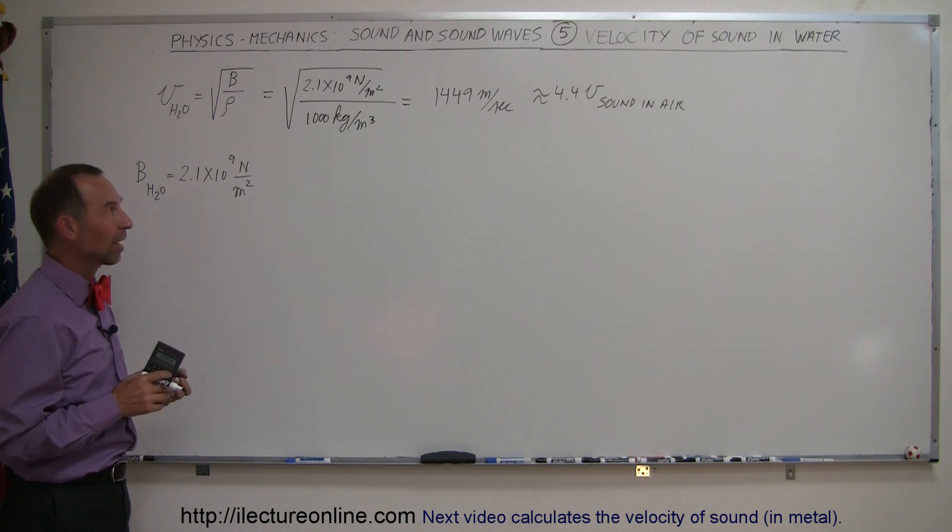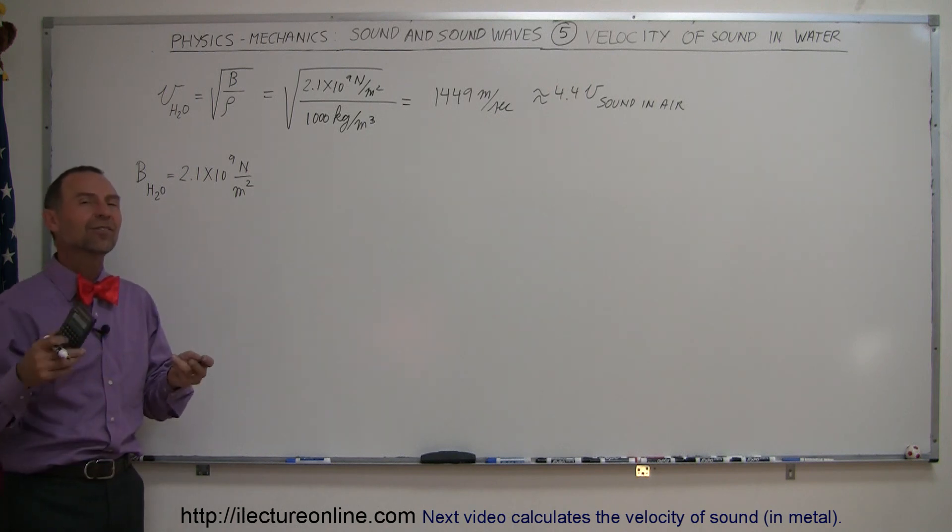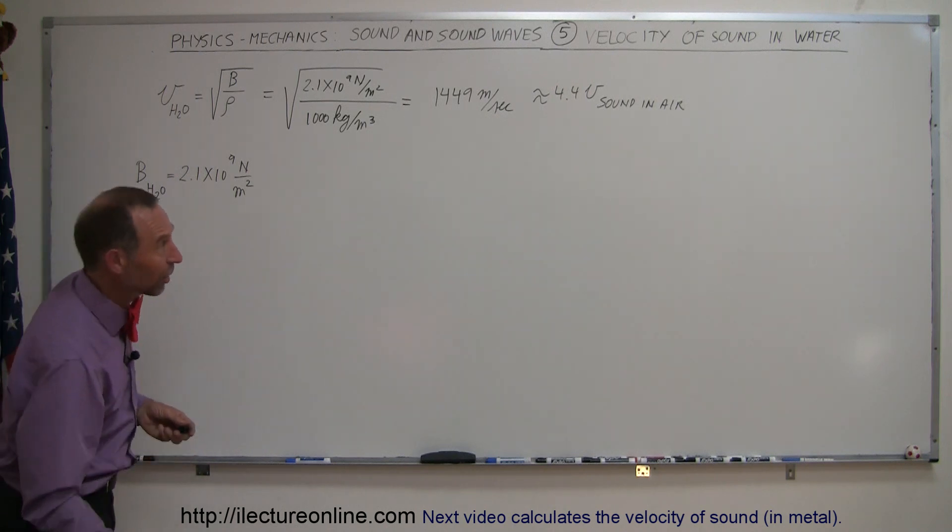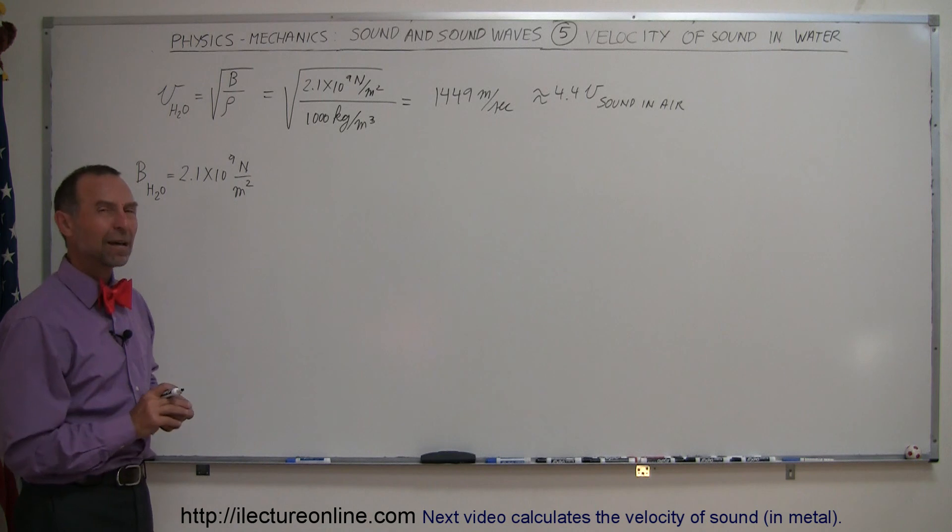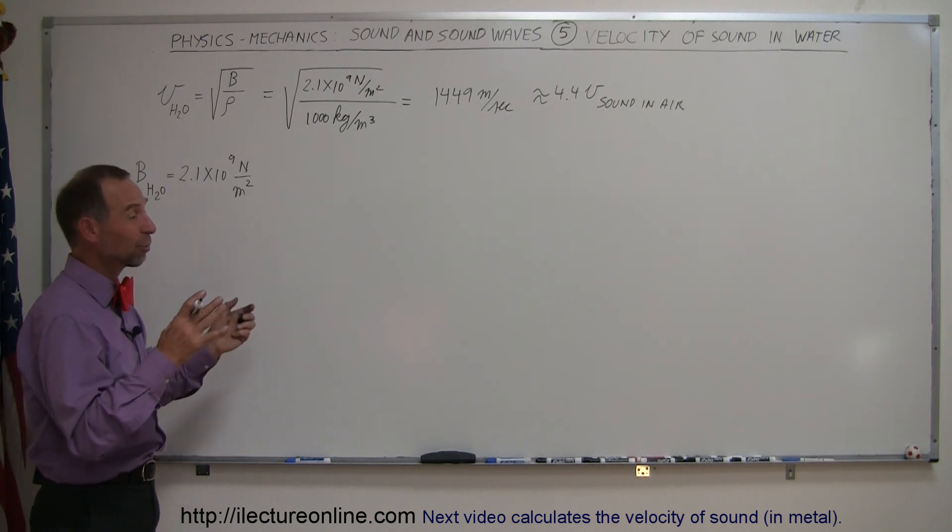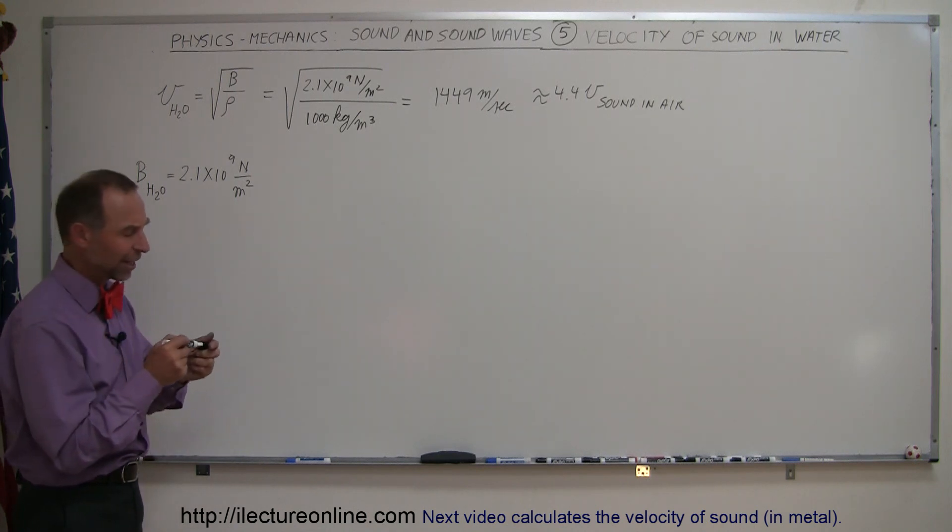So that's how you calculate the sound velocity in water. In our next video we'll calculate the velocity of sound in a metal and see how that compares to water and air. My guess would be that it's a lot faster because, again, metal is much more difficult to compress. So let's find out.